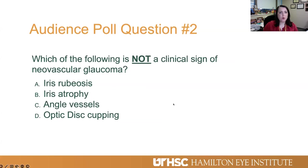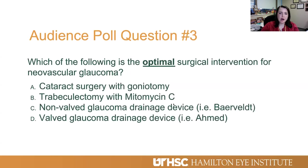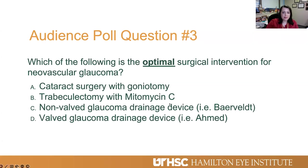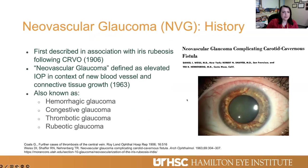Our second poll question: which of the following is not a clinical sign of neovascular glaucoma? Iris rubiosis, iris atrophy, angle vessels, or optic disc cupping? Our third question: which of the following is the optimal surgical intervention for neovascular glaucoma? Cataract surgery with goniotomy, trabeculectomy with mitomycin C, non-valved glaucoma drainage device such as a Baerveldt, or a valved glaucoma drainage device such as an Ahmed? Thank you for participating. Let's get started.